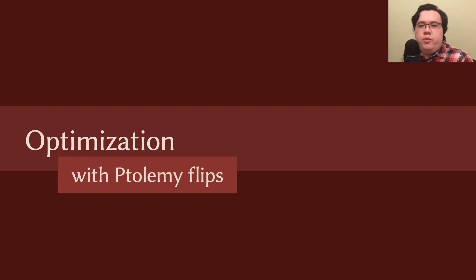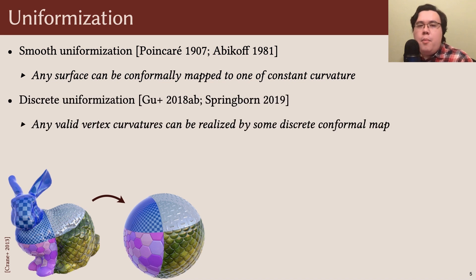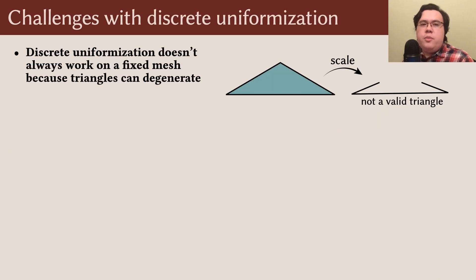I'll start by talking about optimization with Ptolemy flips. The smooth uniformization theorem guarantees that any surface can be conformally mapped to one of constant curvature. Amazingly, it has a discrete analog. Any valid vertex curvatures can be realized by some discrete conformal map, no matter how wild the mesh is. And you can even find these maps just by minimizing a convex energy. However, there's a big problem: this minimization doesn't always work on a fixed mesh, since triangles can degenerate.